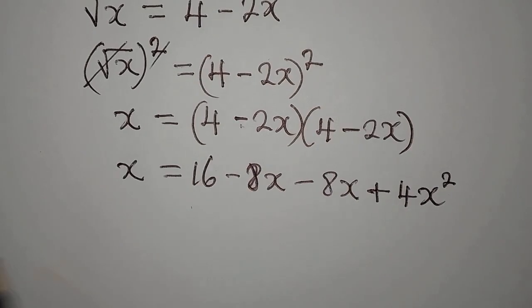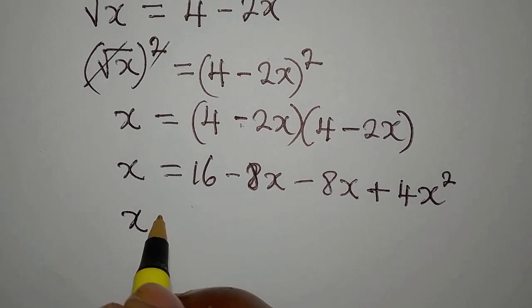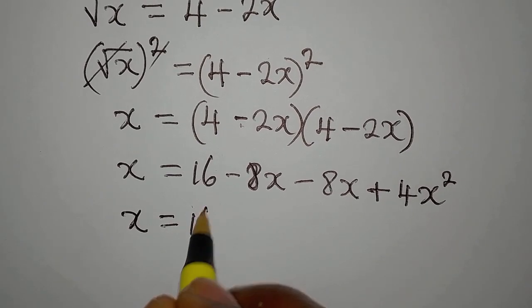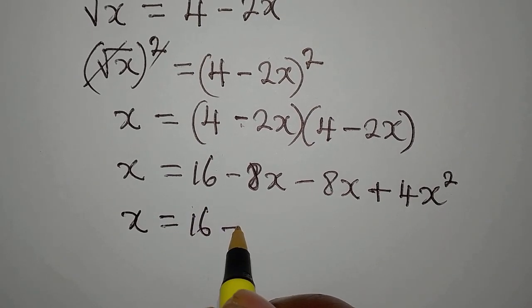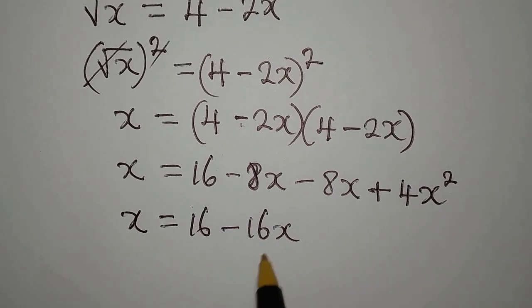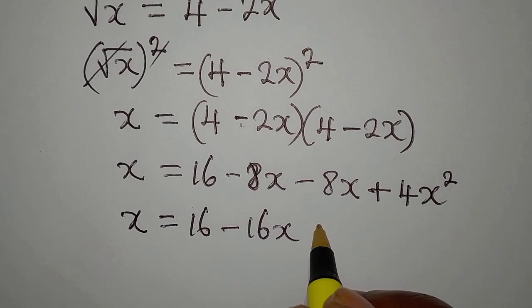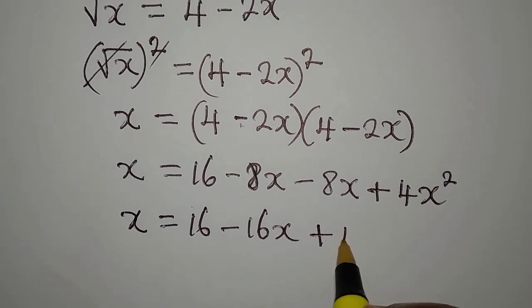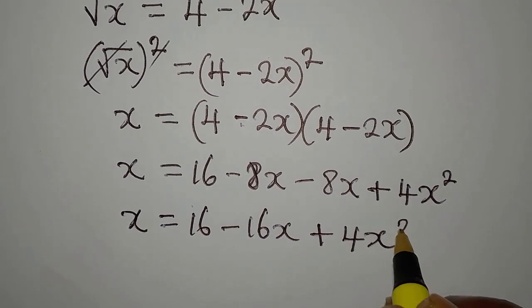This is x, then here we have 16 minus 16x, because minus 8x minus 8x gives us minus 16x, and then we have plus 4x squared.